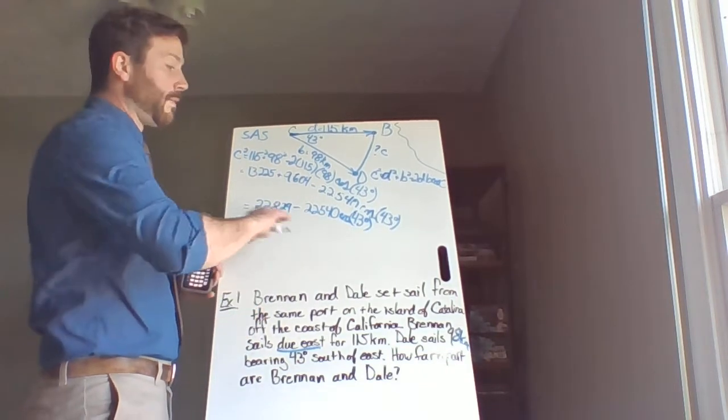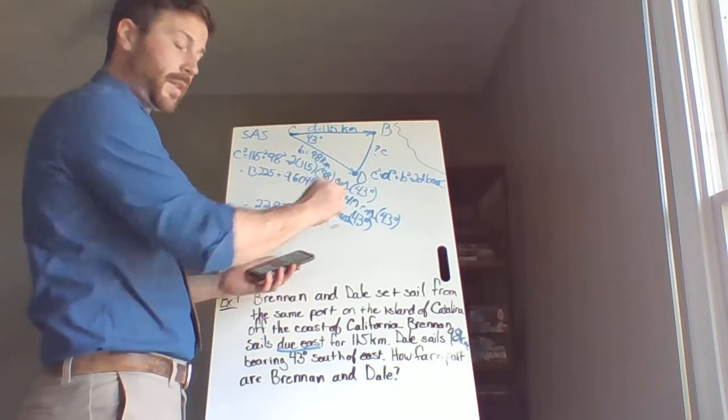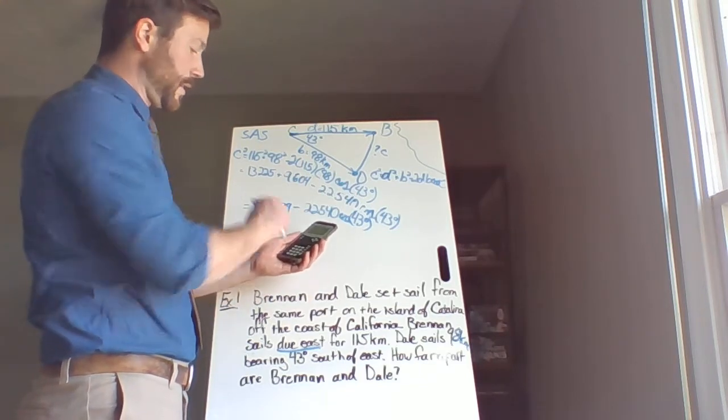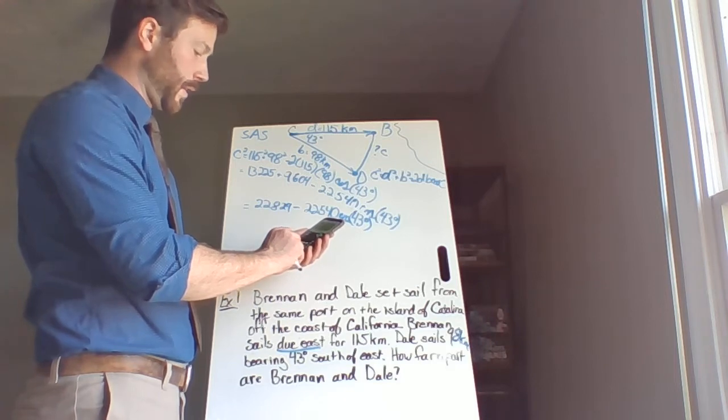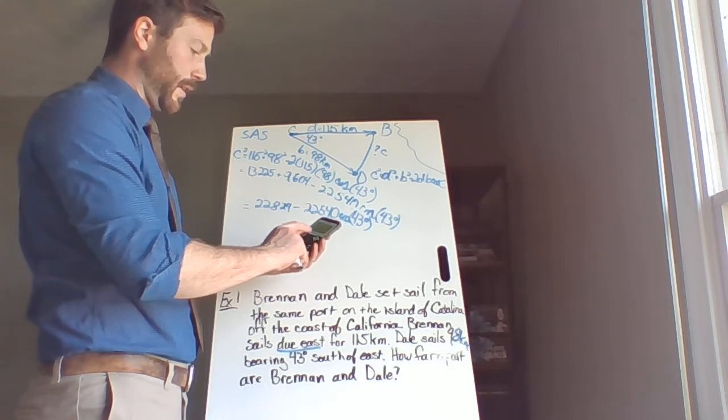minus 22,540 times the cosine of 43 degrees. Now this is pretty much as simplified as it's going to get before we do everything. So let's put this part into the calculator now.